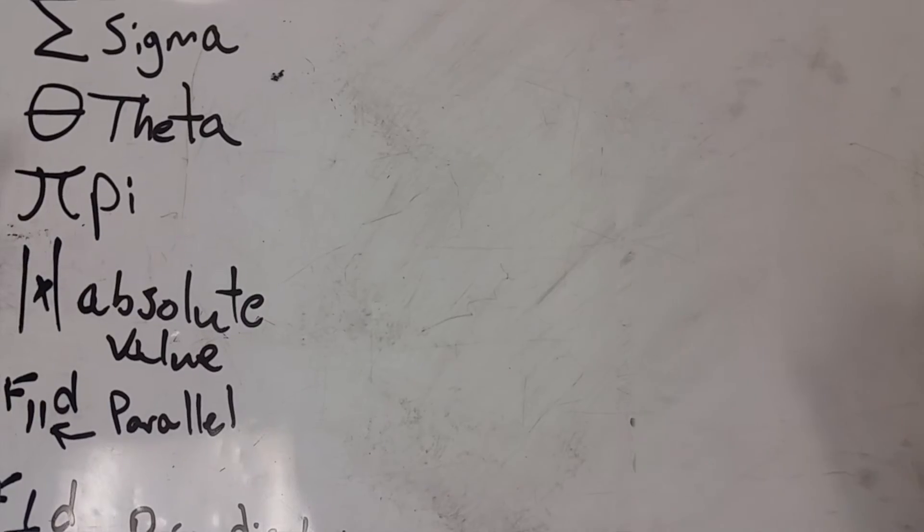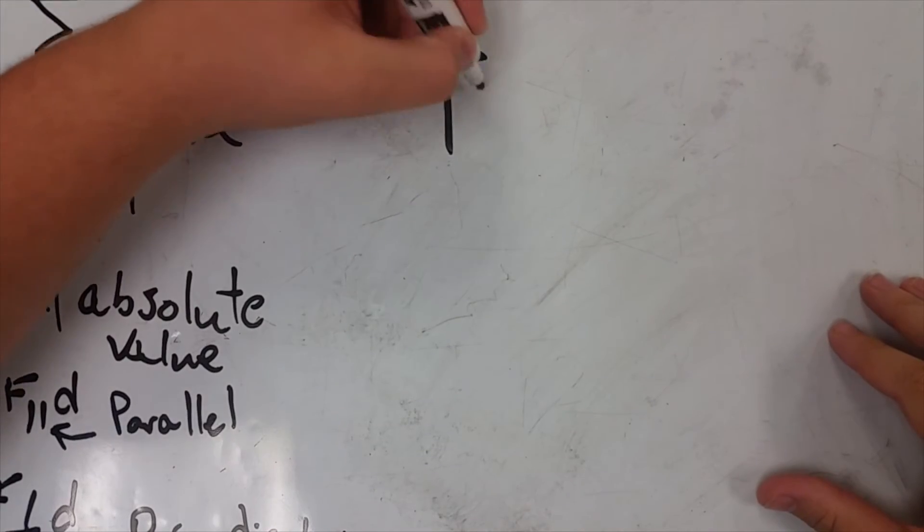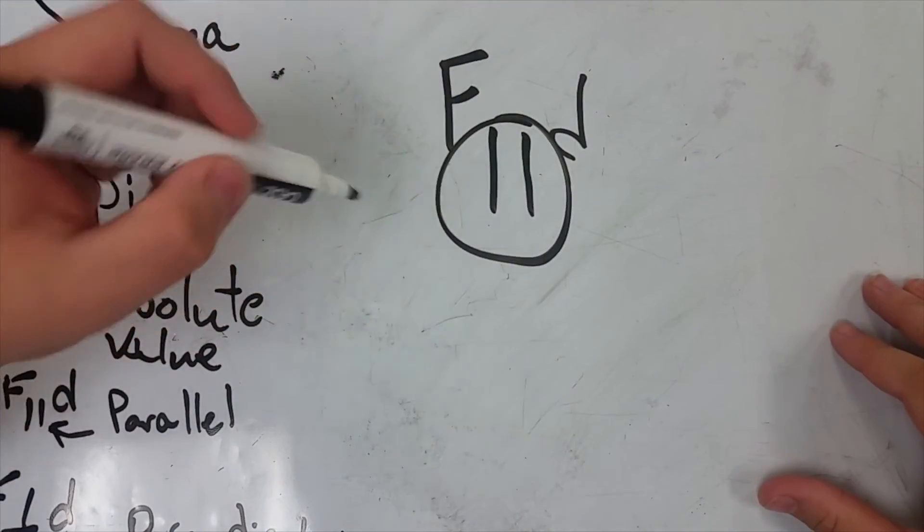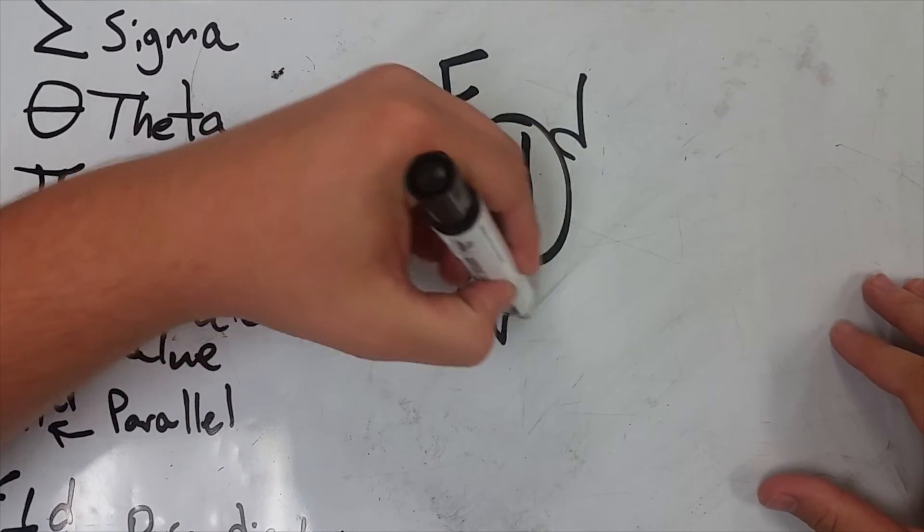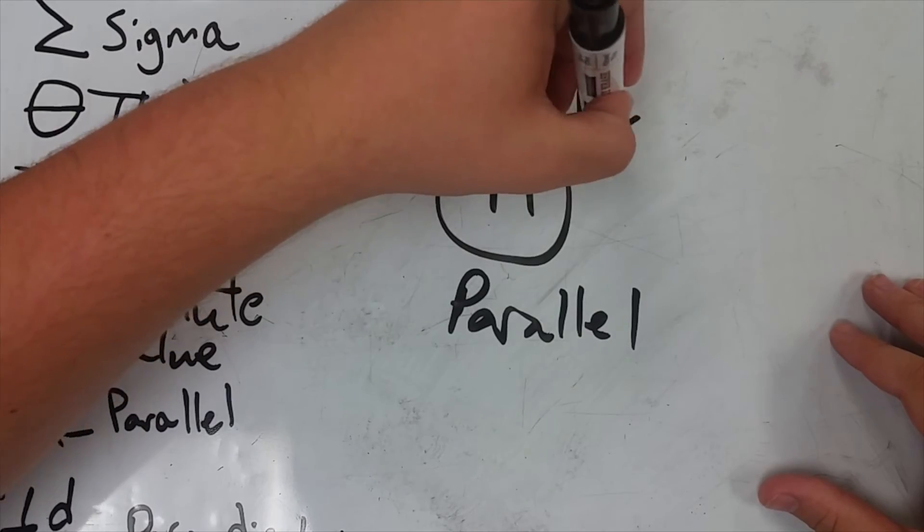The next symbol we're going to go over is parallel. In some equations throughout physics you'll see something like this. That symbol stands for parallel. So F is parallel to D.